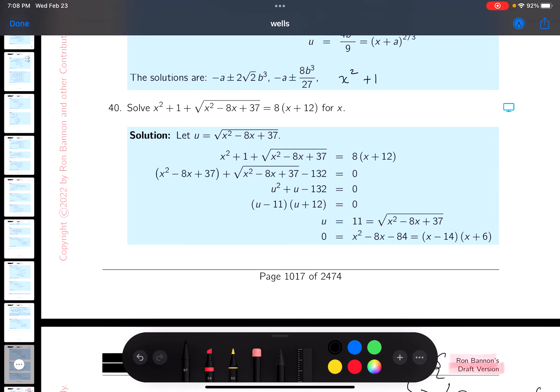So x squared plus 1 plus the root x squared minus 8x plus 37 equals 8x plus that's going to be 96. Let me write this down then: 8x, I'm sorry, x squared minus 8x, 96 from 1 is going to be minus 95. Don't panic yet.